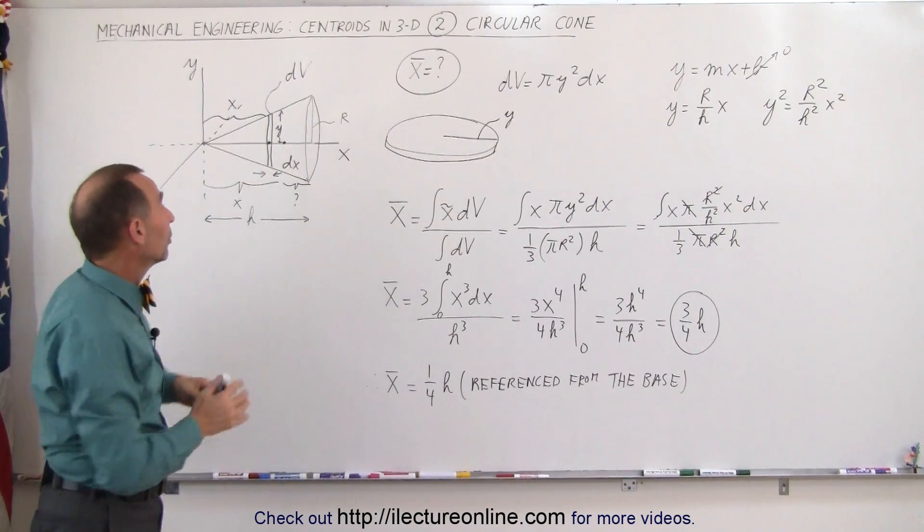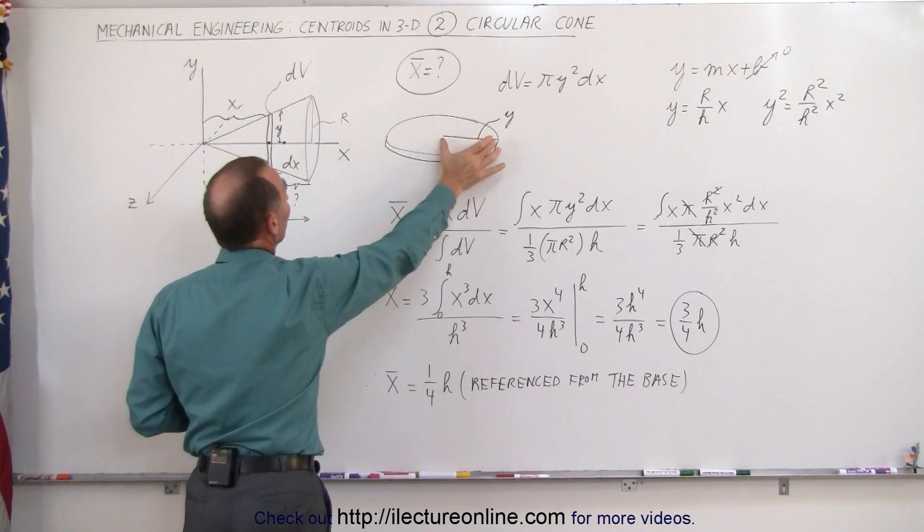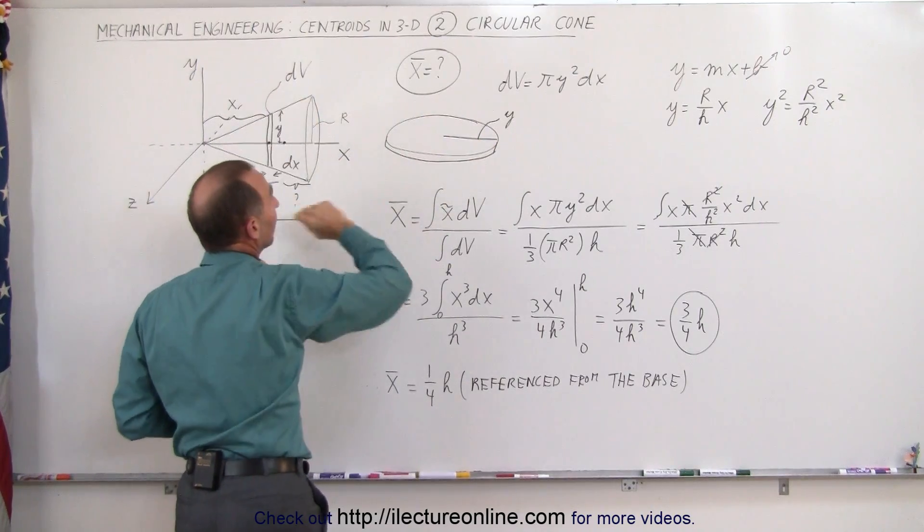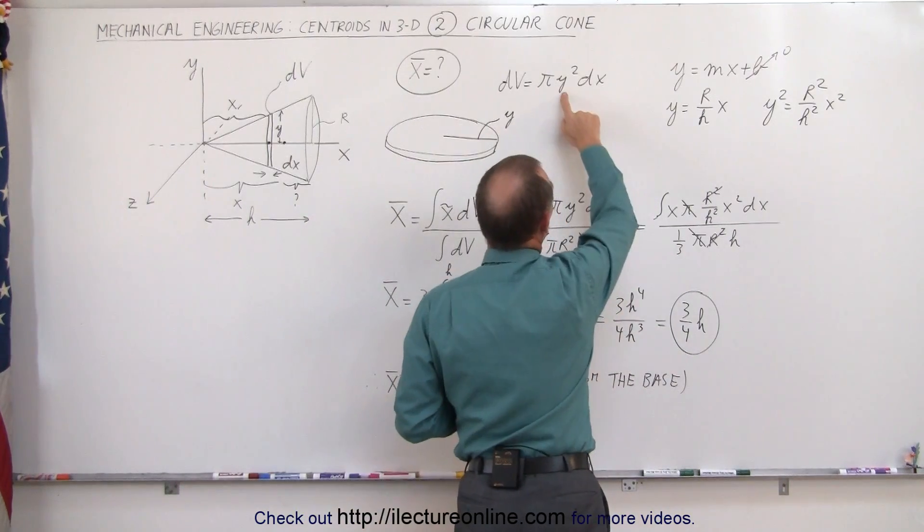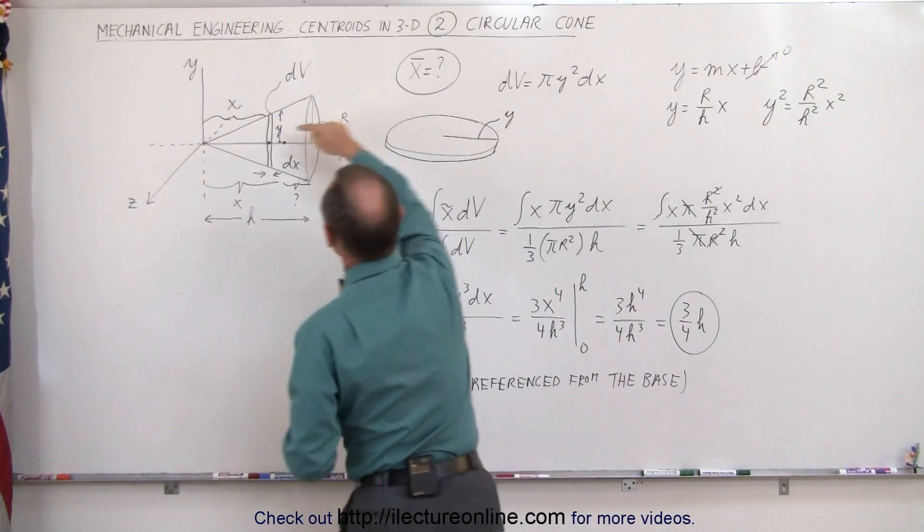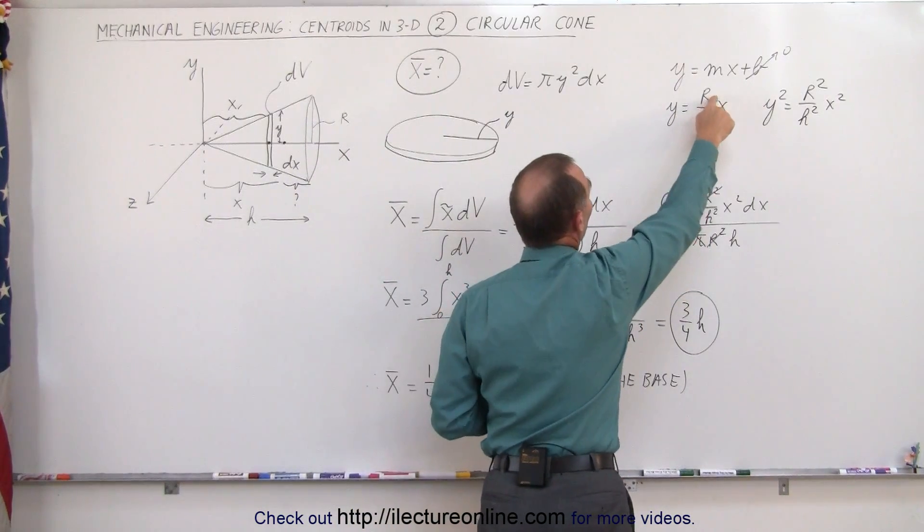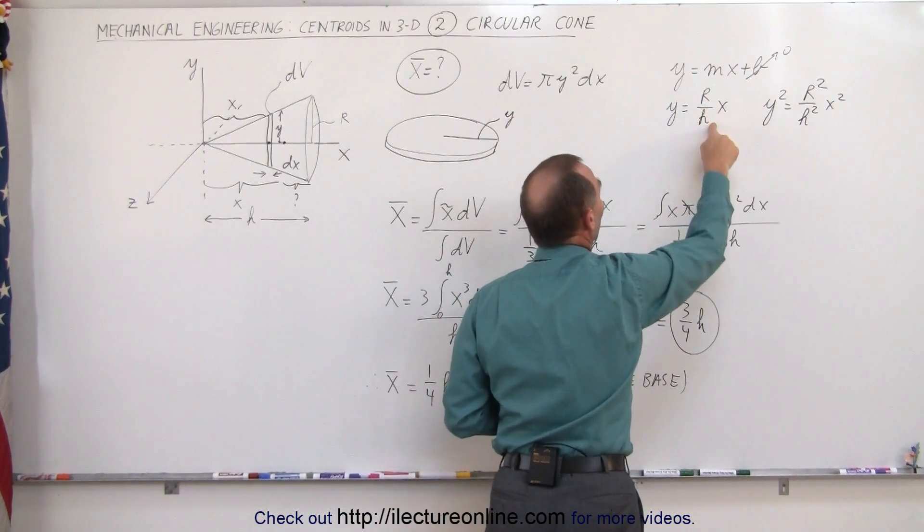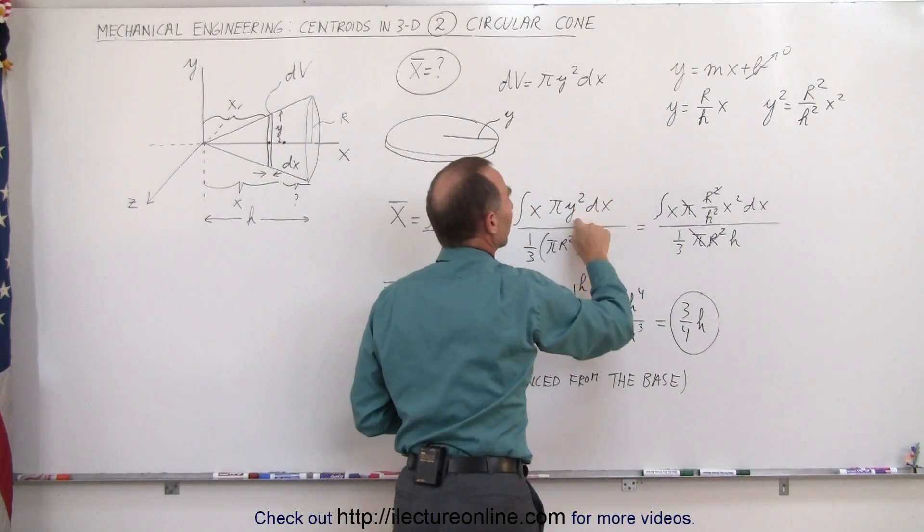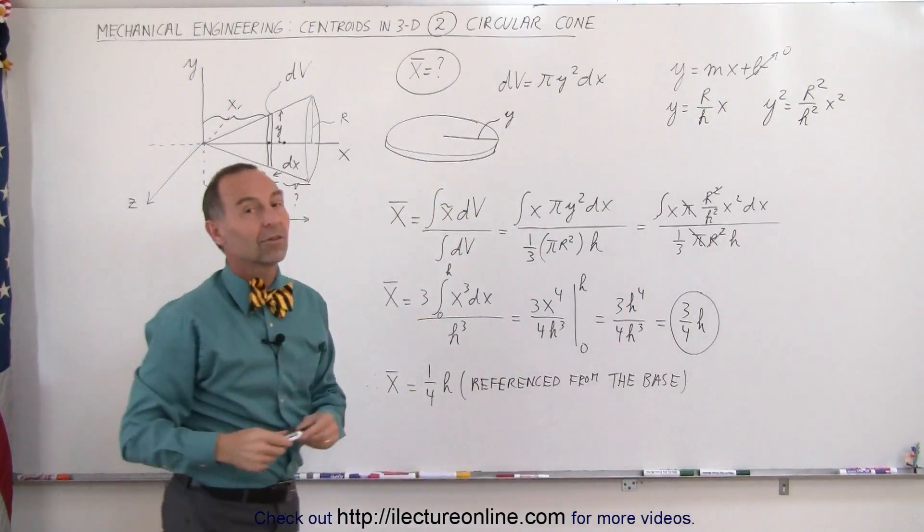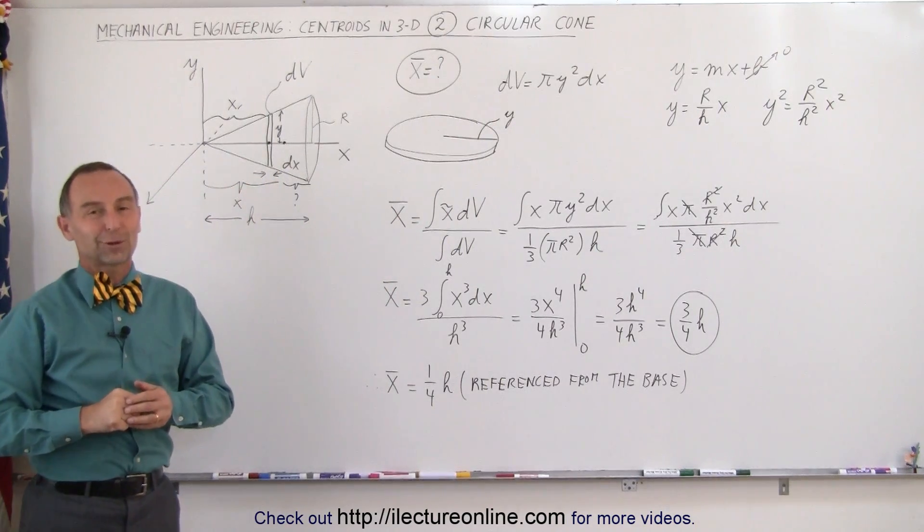The procedure that we follow, we take a small little slice, we call that a small little dv, the radius of the slice in this case is y, so the dv would be πy²dx. We then have to find an expression for y, realizing that this is a straight line, y equals mx plus b, we can write y equals the slope times x, the slope is the rise over the run, r divided by h, and then we substitute that in for y² here in the integral, and then the rest is just integration. That's how we find the centroid of a right-circular cone.